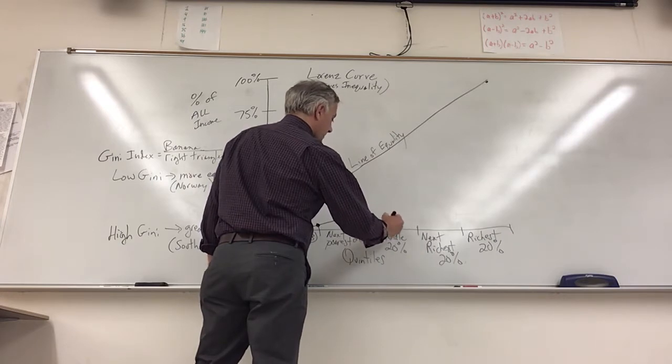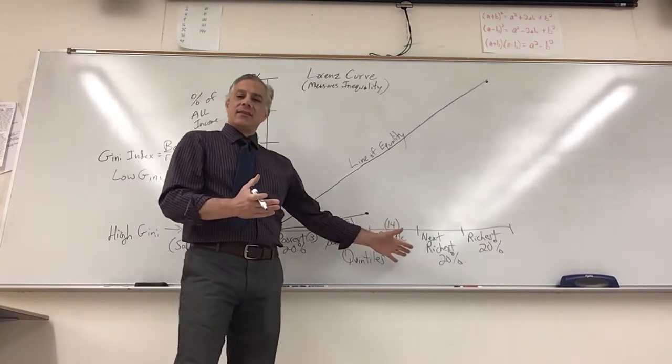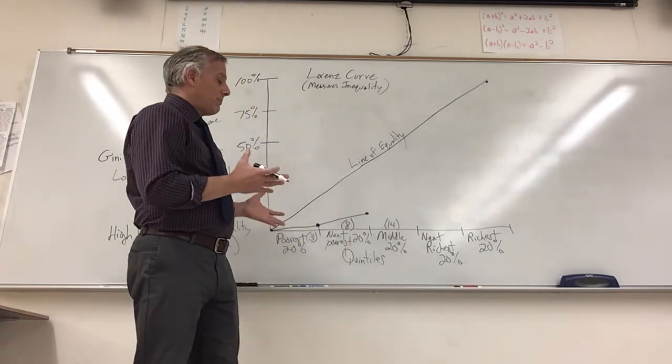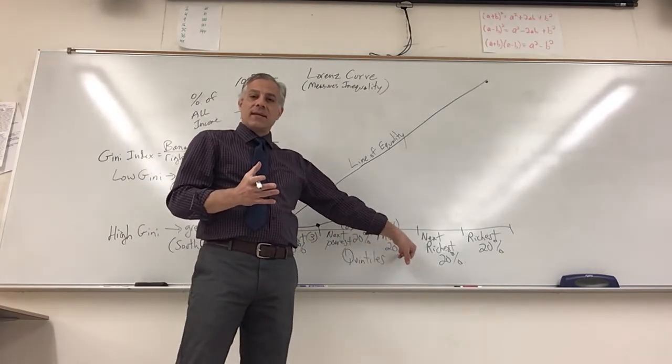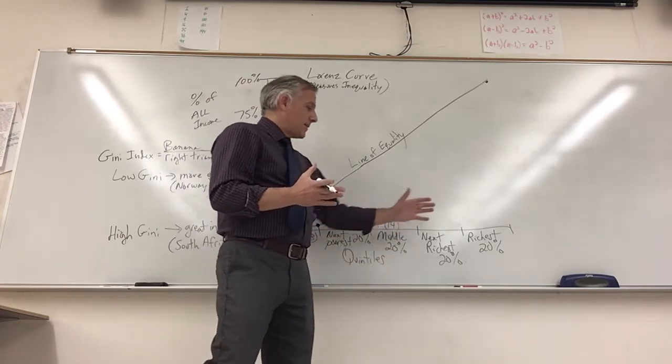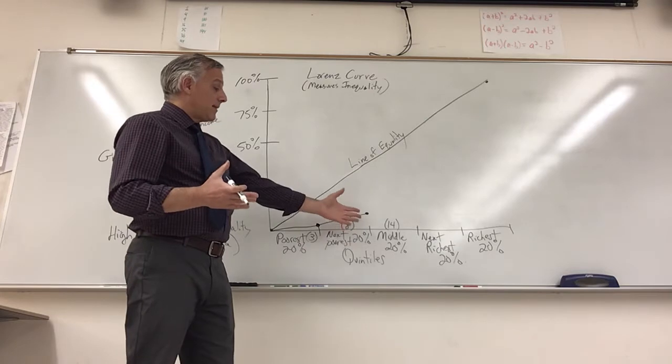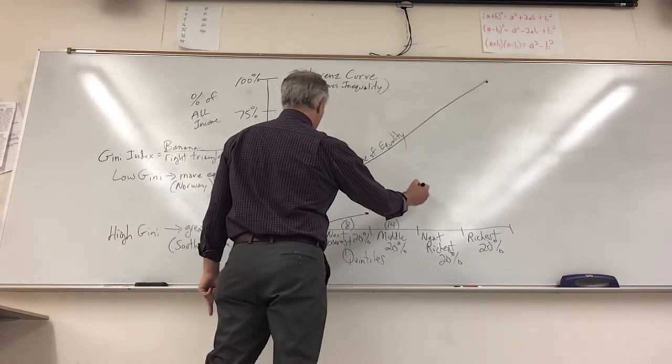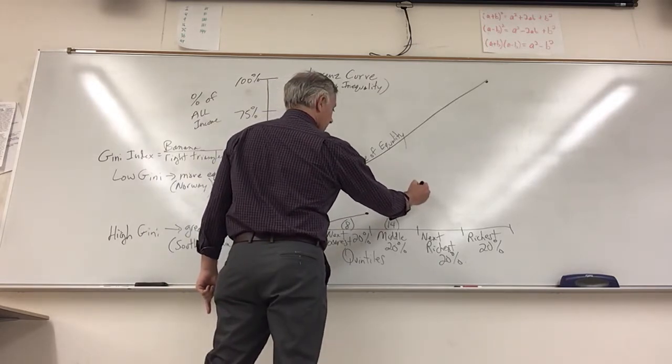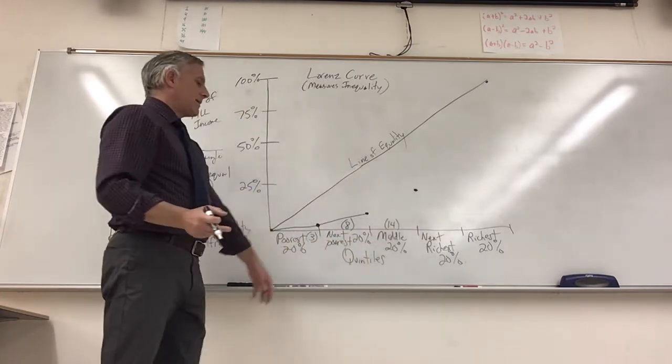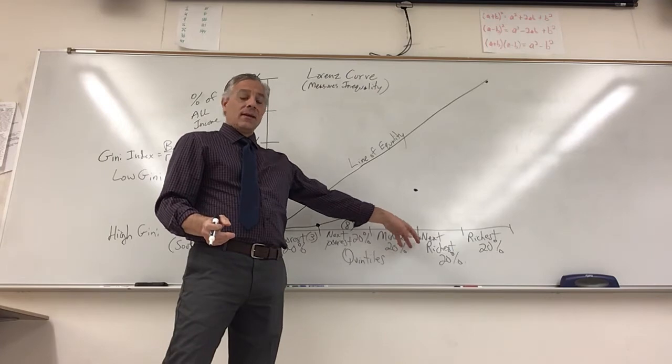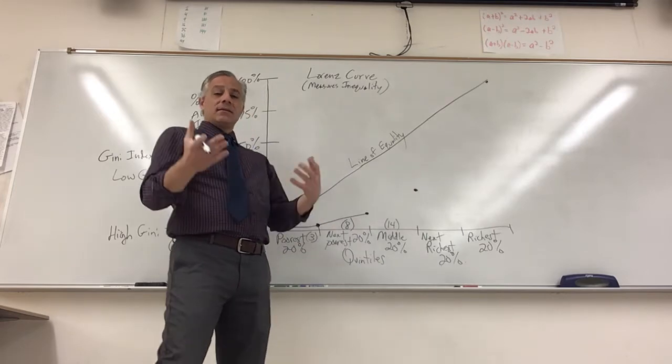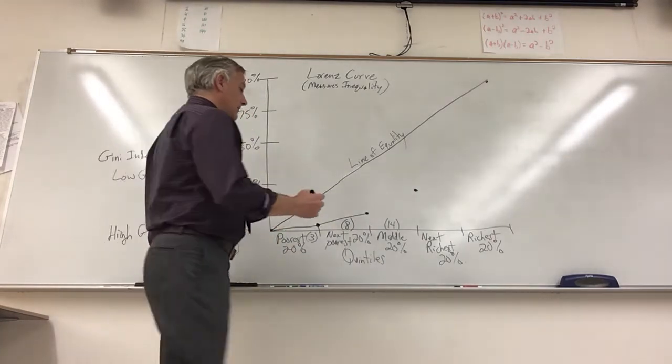The next group gets about fourteen percent of all income. Now this is a good gauge of are we an equal society, because the middle class should be around twenty percent, right? There should be some balance there because this is the middle. That one's the one that should be twenty percent. That's well below twenty percent. That takes us to a total of twenty-five percent of the income. So note we're at sixty percent of the population only has about one quarter of all of the income.